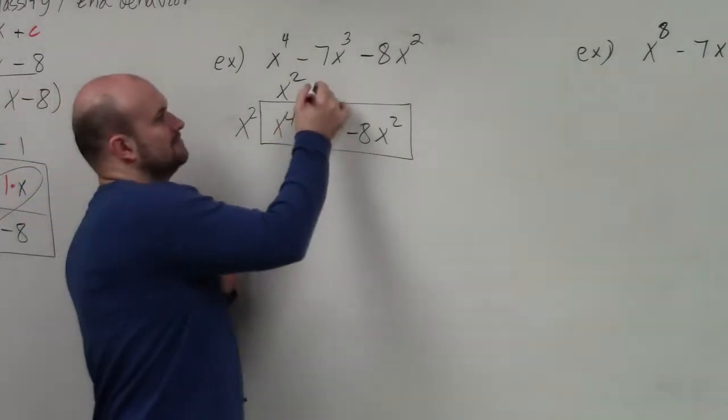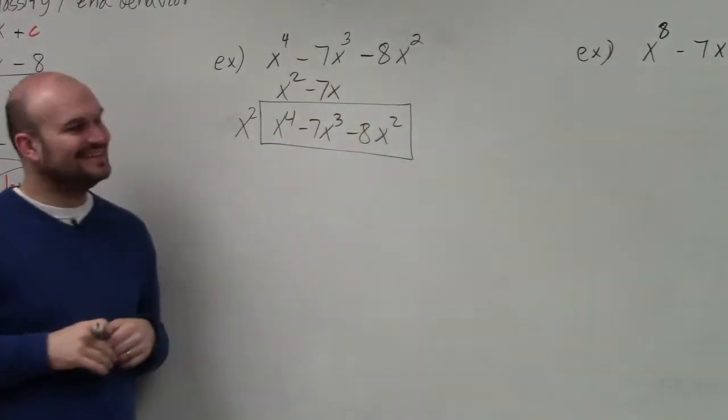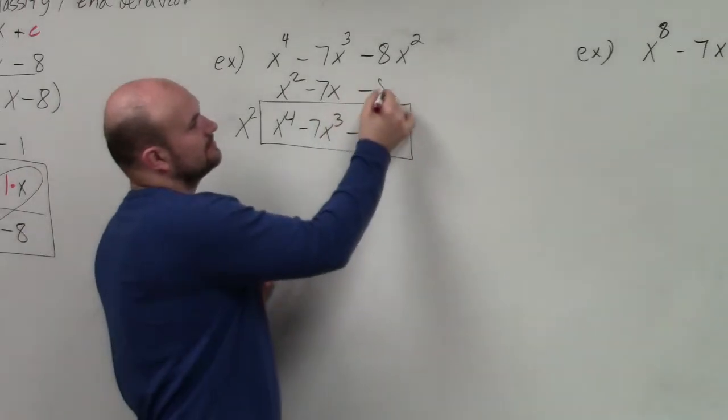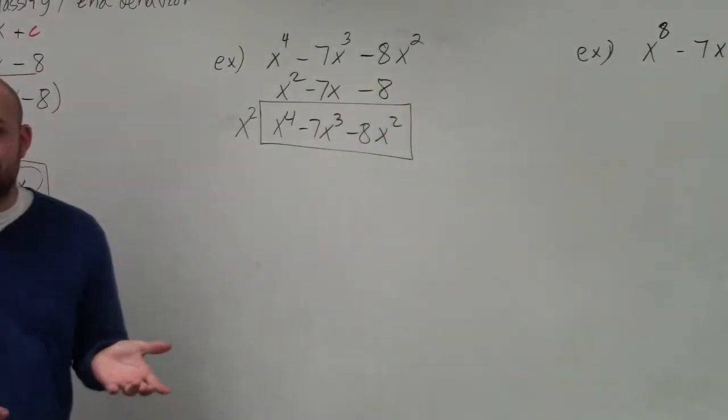Negative 7x, very good. And then x squared times what gives you negative 8x squared? Student: Negative 8x. Teacher: Be careful. It's just negative 8, not negative 8x. OK?